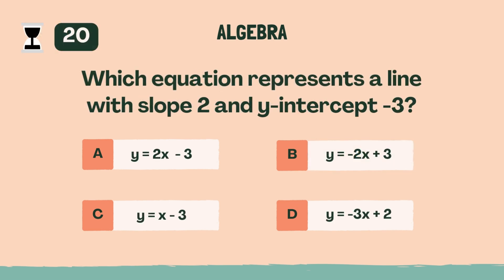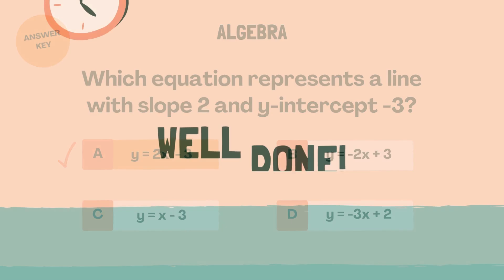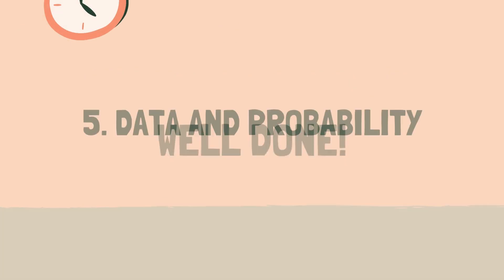Which equation represents a line with slope 2 and y intercept negative 3? A, y equals 2x minus 3. Well done. Let's move on to the next category.